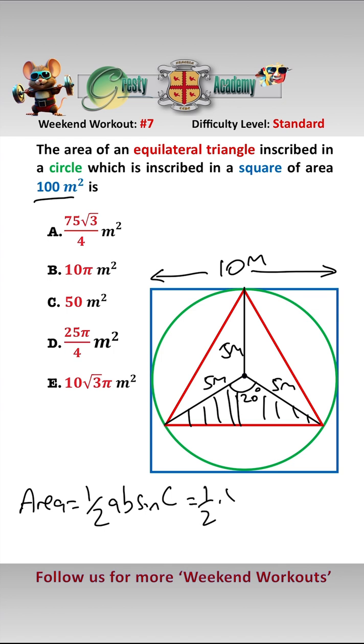So that equals half times 5 times 5 times sine of 120, and sine of 120 is root 3 over 2, so that equals half times 25 times root 3 over 2, which is 25 root 3 over 4 meters squared.